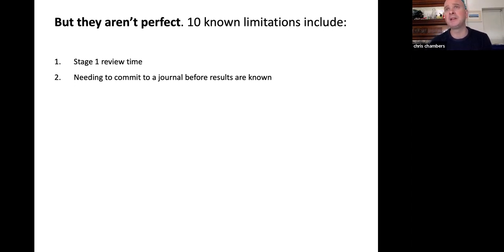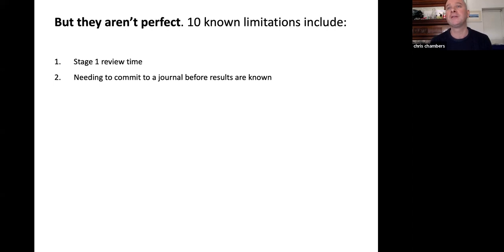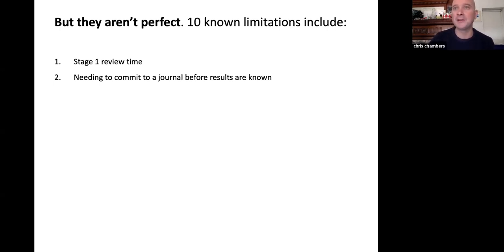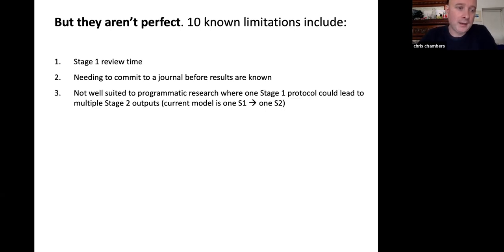Another limitation is that because you submit to a particular journal before you have all your results — which addresses outcome bias — the downside is that you're committing to a journal before you know your results. Depending on what you find, different journals might be more suitable. The registered reports process at the journal level socially obliges you to stay with that journal. It's actually not a requirement — you can move and start over elsewhere — but it tends not to happen.